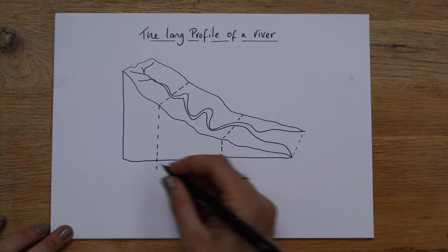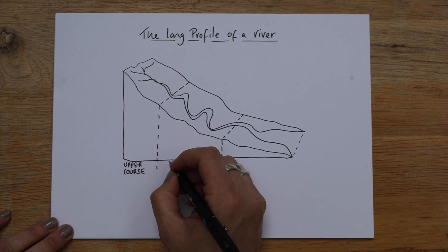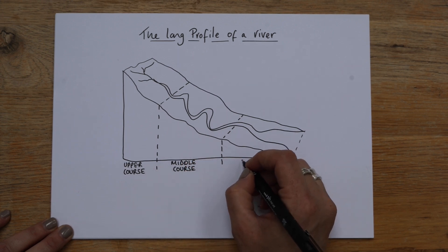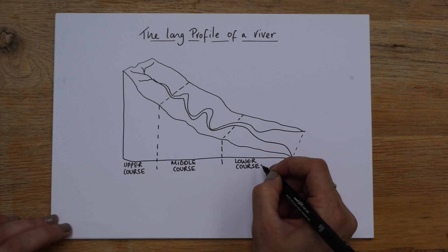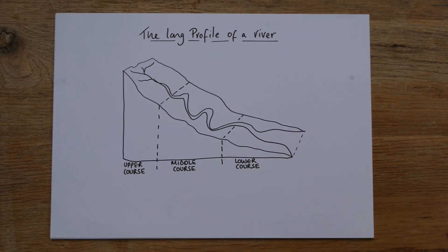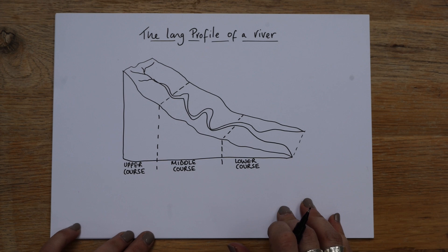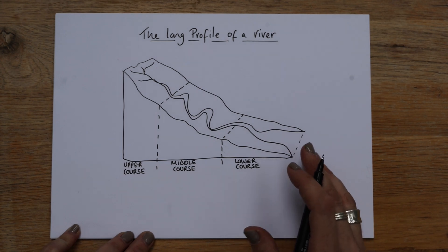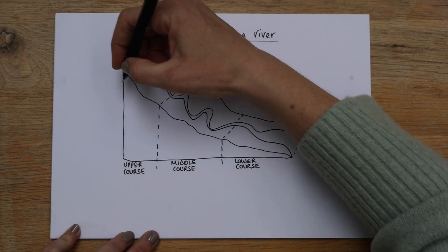Let's label those — upper course over here, and then middle course. The words to do with rivers all kind of make sense, though there is quite a lot of terminology and new keywords with this one. If you're studying AQA GCSE Geography, rivers is always in the exam — it's technically an optional section but it's always there. There's coasts, rivers, and glaciation, and most schools will do coasts and rivers, so rivers is a really important one.